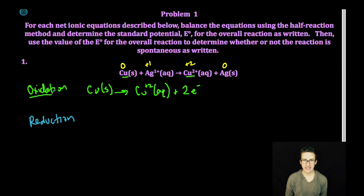Notice though, here the copper is being oxidized. So to turn my reduction potential into an oxidation potential, I simply need to flip the sign. So we go from positive 0.34 volts to negative 0.34 volts because the copper is being oxidized.